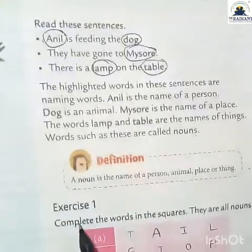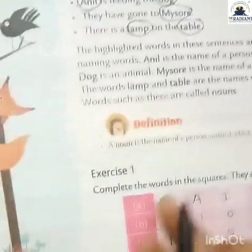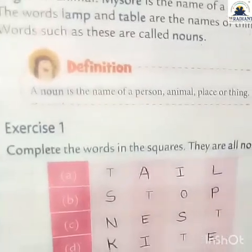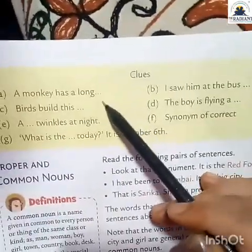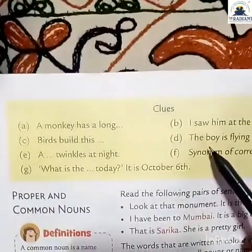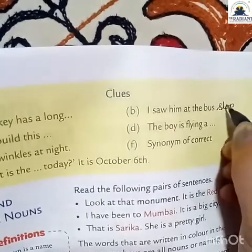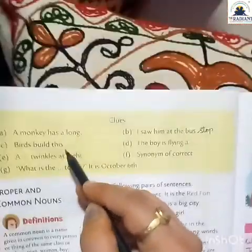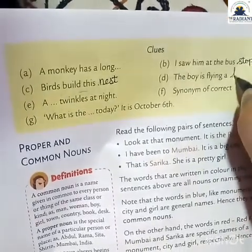Students, now we have to start with Exercise 1 — complete the words in the squares; they are all nouns. This is on page number 34. First clue: a monkey has a long — tail. Second clue: I saw him at the bus — stop. Bus stop is the name of a place. Third: birds build this — nest (N-E-S-T). Again, it is a place where birds live. Fourth: the boy is flying a — kite.